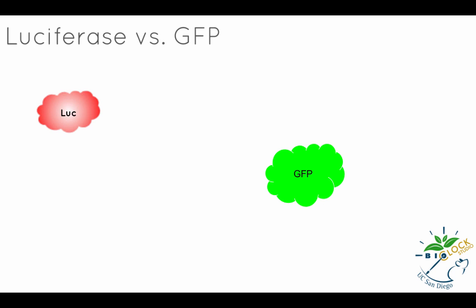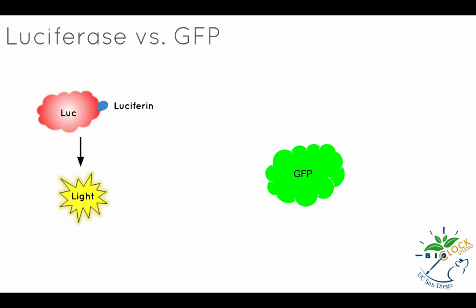We would like to point out the key differences between luciferases and fluorescent proteins, as luciferase fusions are usually not good at resolving where within a cell a protein is targeted. For this, a different kind of reporter — a fluorescent reporter — is used. Luciferases do not require an external light source, but require a substrate, luciferin, to emit light. They generate light called bioluminescence through the enzymatic luciferin-luciferase reaction. On the other hand, fluorescent proteins do not require a substrate, but require an external light source to emit light — the absorbed light of a certain wavelength — and emit light with a longer wavelength.